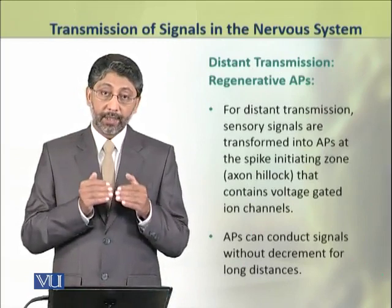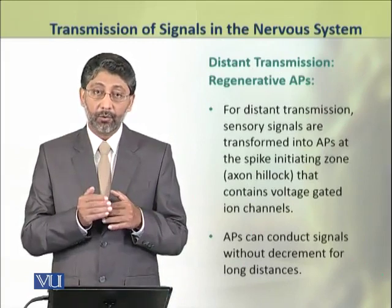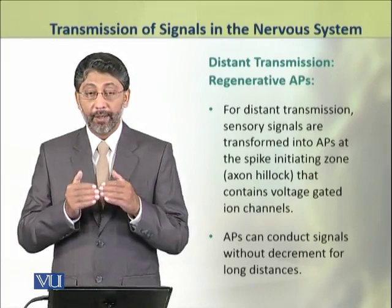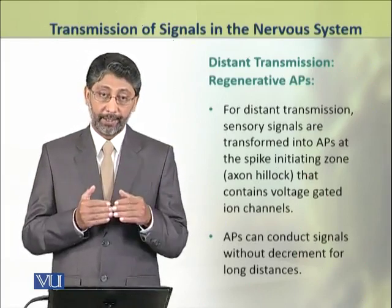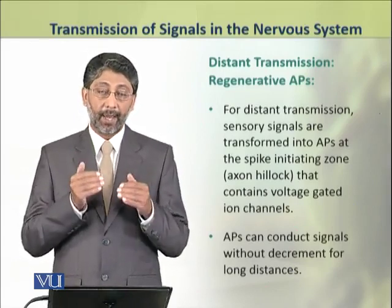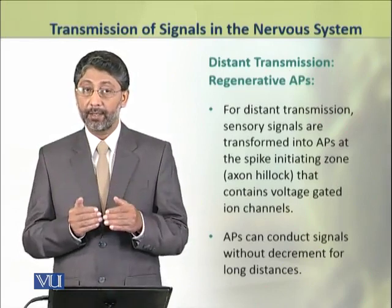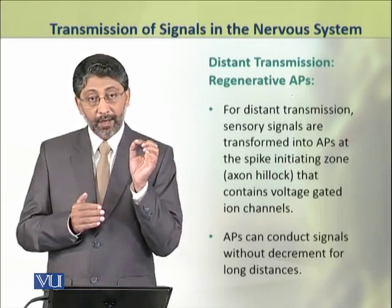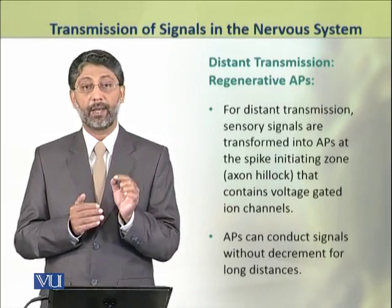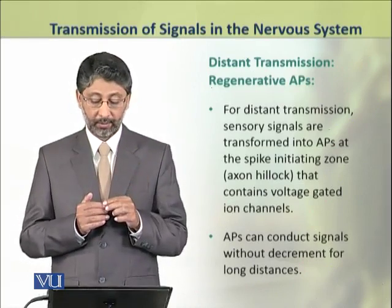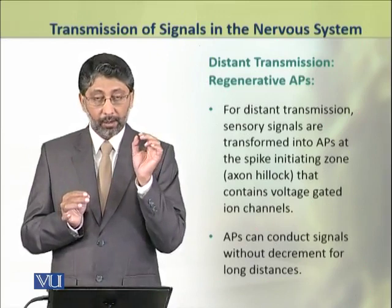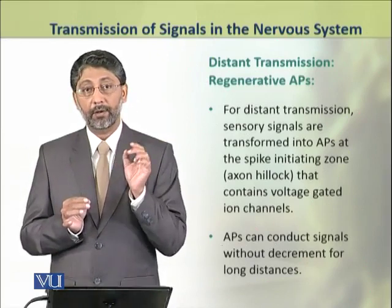For distant transmission, the axon hillock contains voltage-gated ion channels, and this is why action potentials can be initiated here. These action potentials can conduct signals without decrement for long distances.